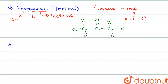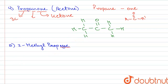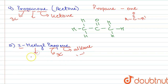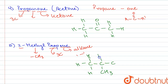Fifth, we have 2-methylpropane. 'An' means it is an alkane with single bonds between carbon atoms. The word root 'prop' means it has three carbon atoms, and there is a methyl group (CH₃) attached at the second carbon. We write carbons one, two, and three, attach a methyl group at carbon two, and complete the remaining valencies with hydrogen atoms. This is the structure of 2-methylpropane.